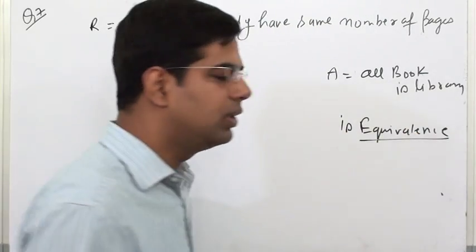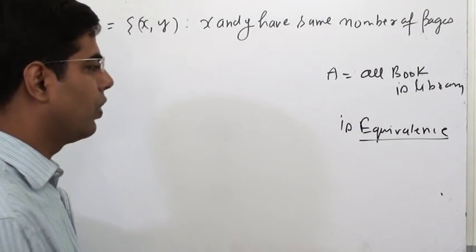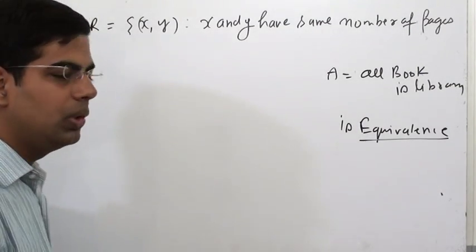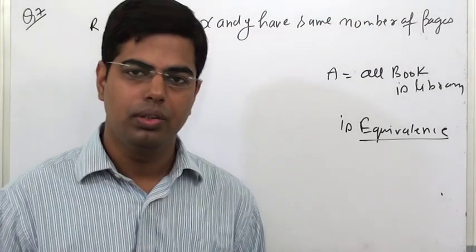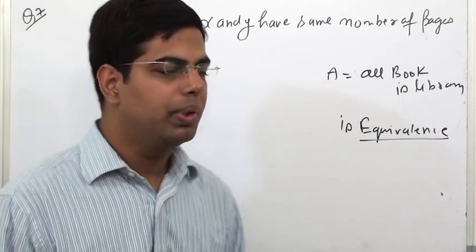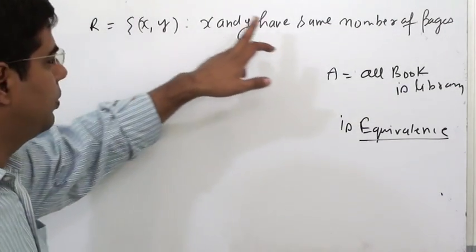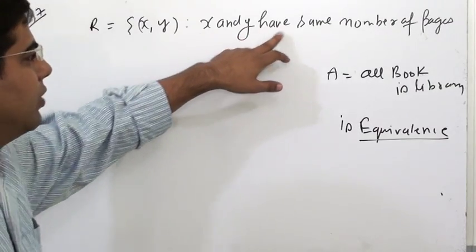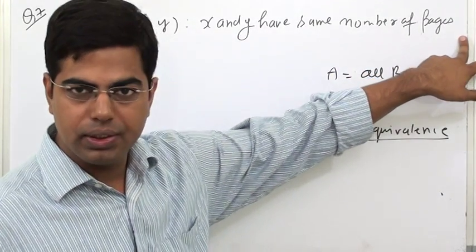An equivalence relation is when it is reflexive, symmetric, and transitive. Here we will prove that X and Y have the same number of pages.